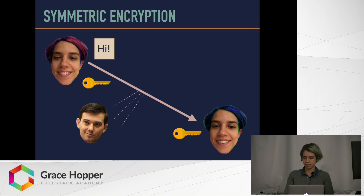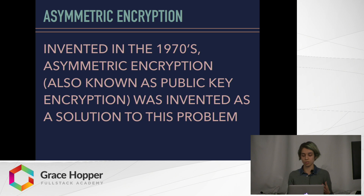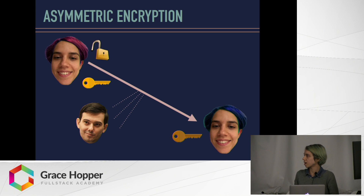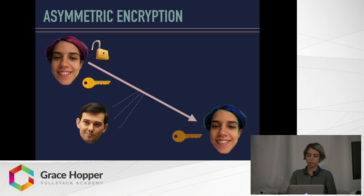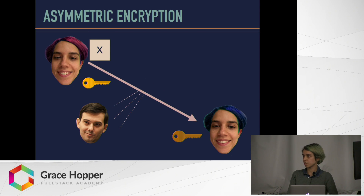So what's a possible solution to this? Something called asymmetric encryption. Asymmetric encryption was invented in the 1970s as a solution to this problem — it's also known as public key encryption. With asymmetric encryption, person A has a key and person B has a key, but they're different keys. Person B has a lock or a special algorithm that can only be unlocked with person A's key — person A is the only person that has this key. So instead of just sending out a message, person A sends the open lock or the algorithm to person B. Person B then takes that lock, takes the message they want to encode, encodes that message, and sends it back to person A. Person A is the only person that has the key to decode this message, so Martin Shkreli can't listen in.